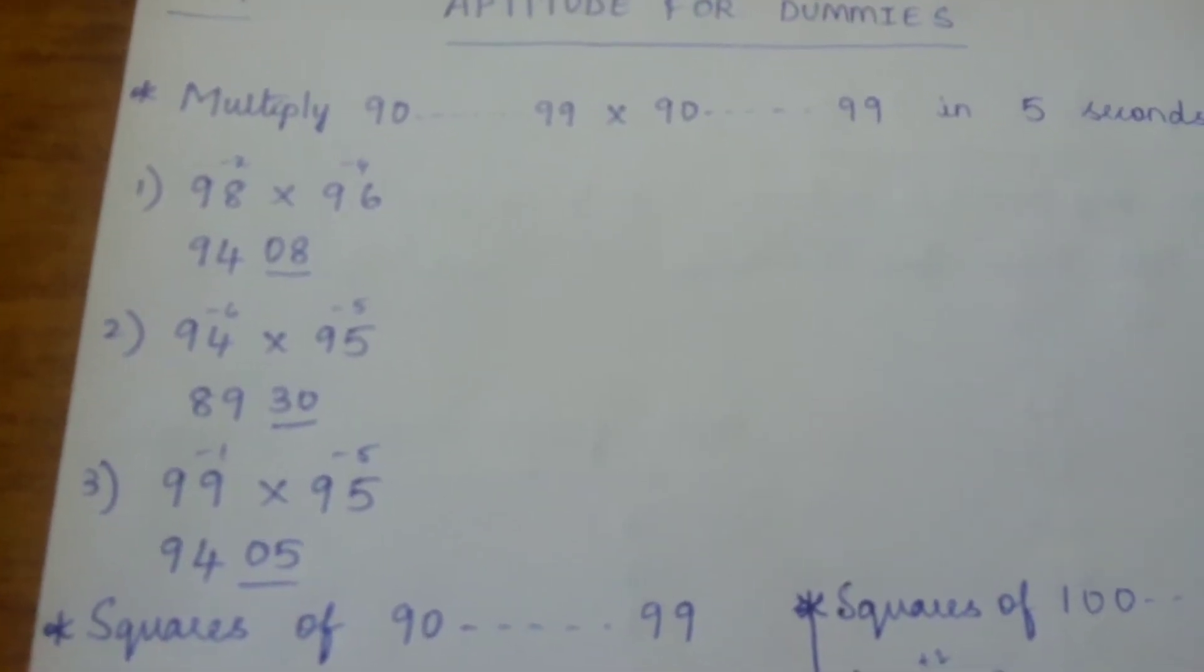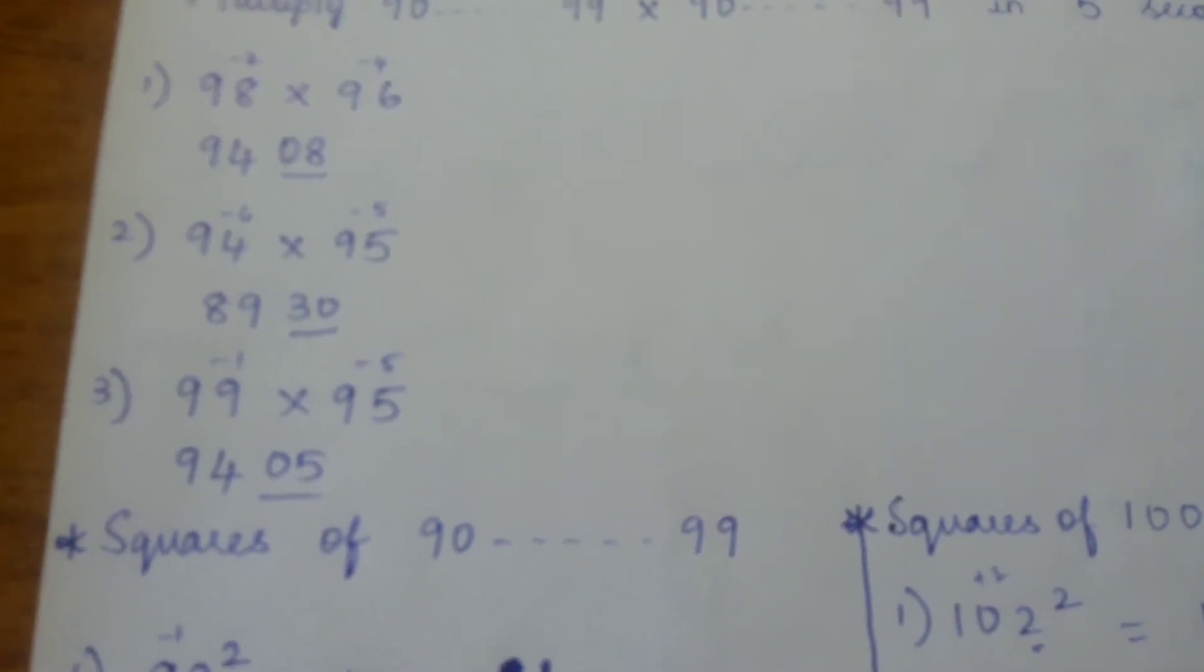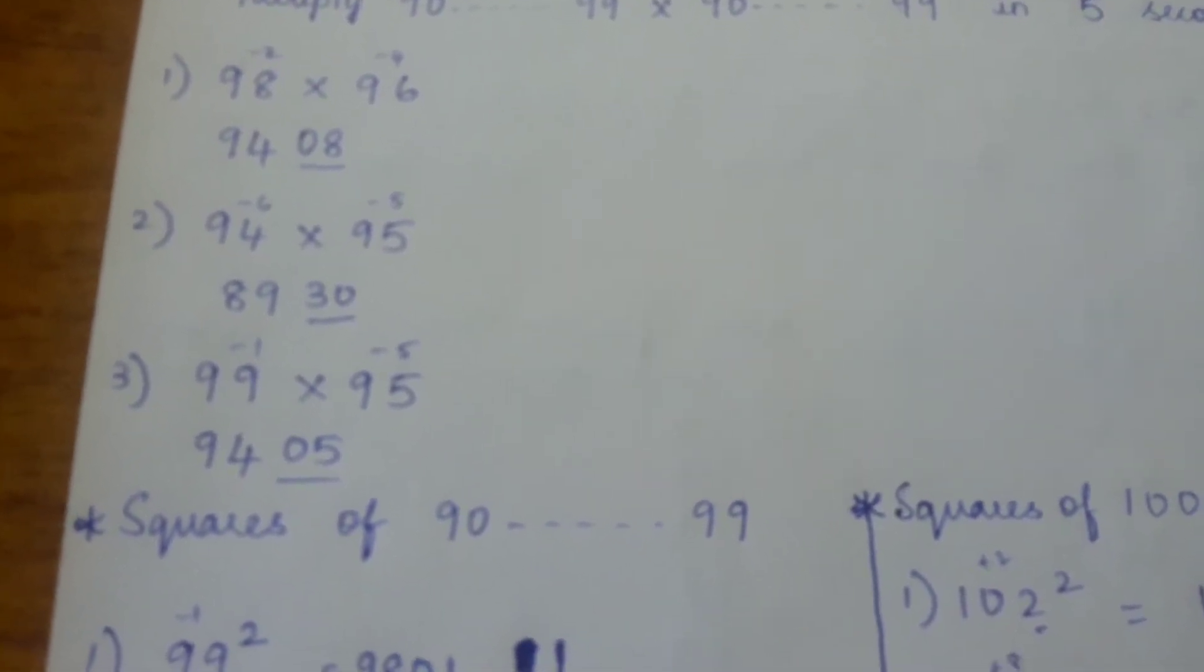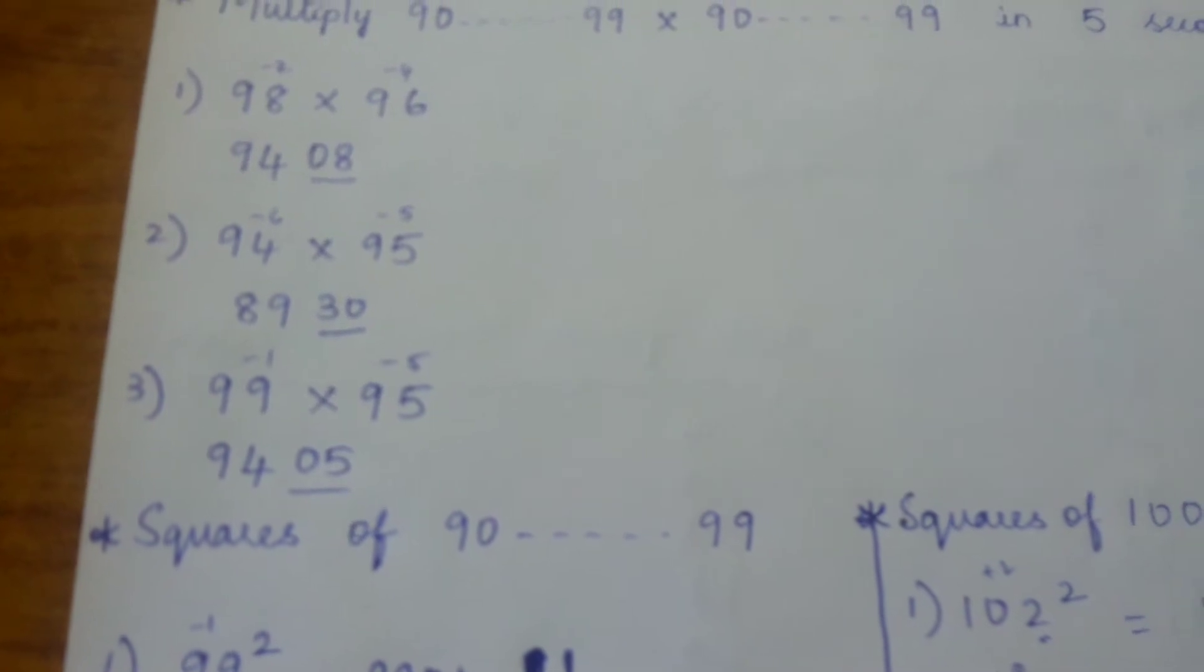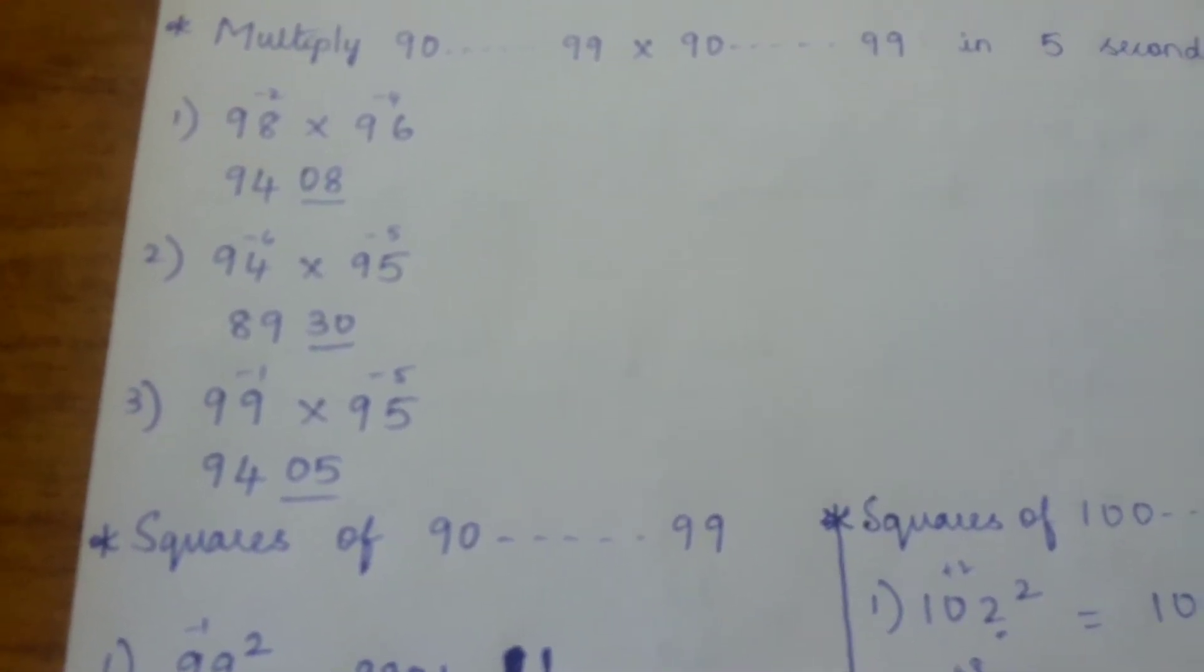Third one: 99 into 95. 99 is 1 less than 100, 95 is 5 less than 100, so the last two digits will be 05. Now subtract 99 minus 5 or 95 minus 1, which gives you 94.